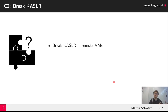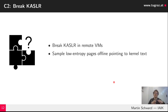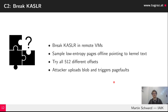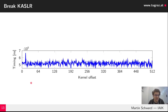Another use case shown in the paper is how we can remotely break KASLR in remote VMs. We sample low-entropy pages — ideally pages in a kernel text image containing only a certain pointer. Since the entropy of the kernel text segment is not high — only 2 to the power of 9 — we can try all 512 different offsets. By creating 512 guesses and using a similar scenario as for fingerprinting, the attacker uploads binary large objects and triggers page faults. Clearly, the correct offset is significantly higher from a timing perspective than all other 512 offsets.